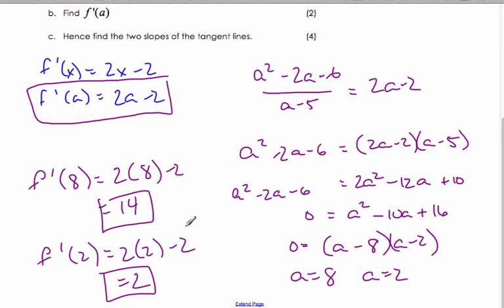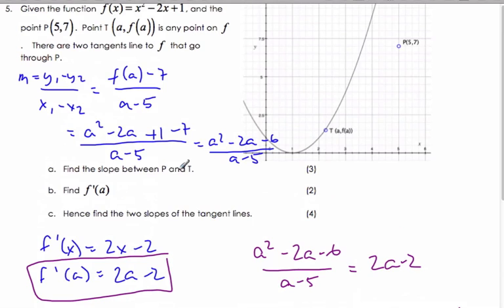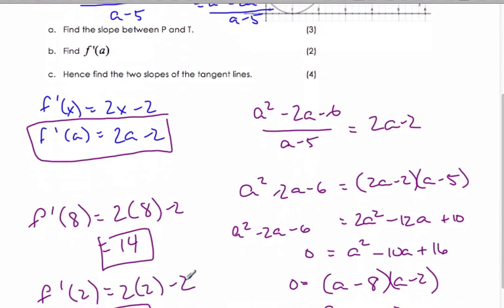So recapping, I use the idea of slope with these two points, general point and the point I'm looking for. And I get an equation in terms of a. Find the derivative in terms of a. They must be equal because they both represent the slope. Set them equal, solve for a, and you're able to calculate the actual slopes.